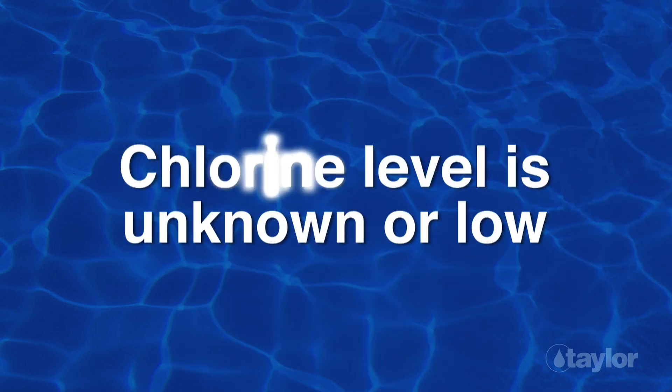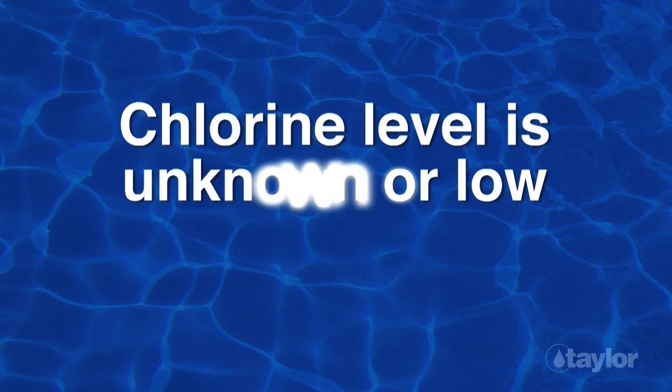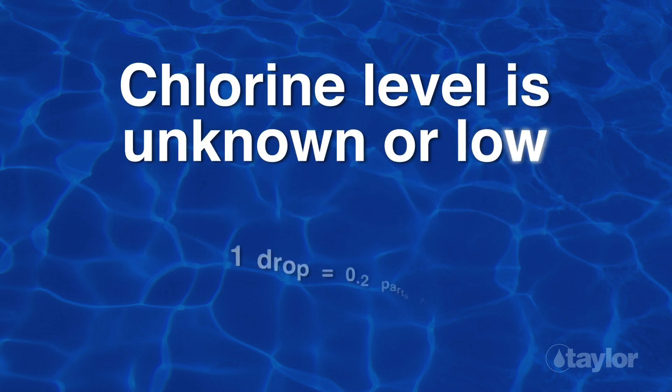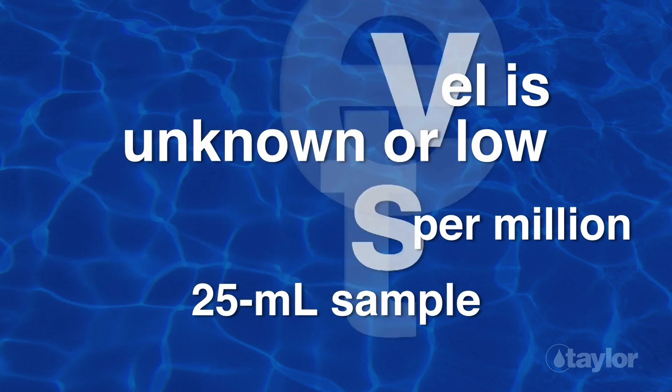If you do not know the chlorine level or you suspect it is low, use one drop equal to 0.2 parts per million and a 25 ml sample. This demonstration assumes the chlorine level is unknown.